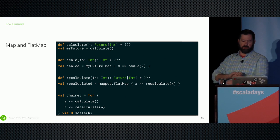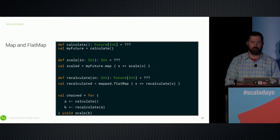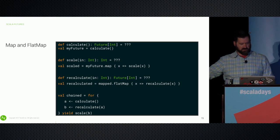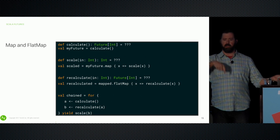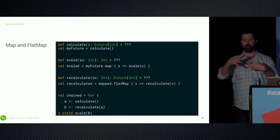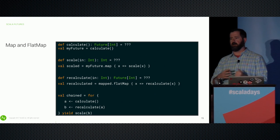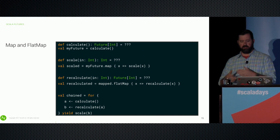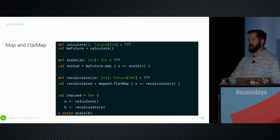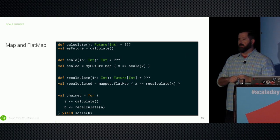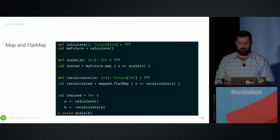Recalculate is an example where the method does something future-y — maybe going off to a third-party service. So using flatMap, once we have the value, we go off and do the recalculate and get a future back, combining those future contexts together. Map and flatMap give us a nice piece of syntax sugar in Scala: for comprehensions. We can say 'for a from calculate, b from recalculate with the value of a, yield scale of b' — this all chains together and produces a future.